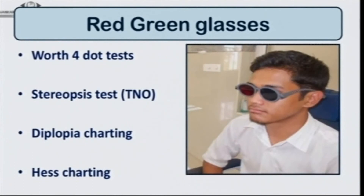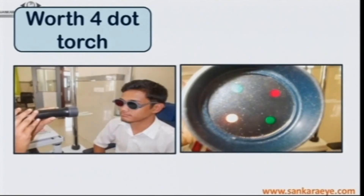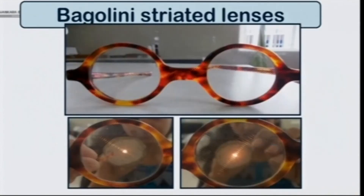Red and green glasses are important to have because they help not just in the Worth 4.0 test, but also in stereopsis acuity measurements, diplopia charting, and HES charting. The Worth 4.0 torch can also be improvised using a normal torch — just stick colored papers on it along with an occluder, and it becomes a Worth 4.0 torch.